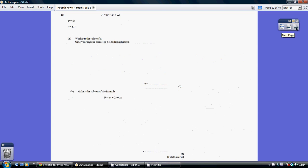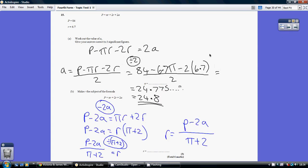Question 15. Not too bad. We've got to work out the value of a, so I would just make a the subject. This is the only term with a in it, so just take everything else to the other side. Take away 2r and take away pi r. So p minus pi r minus 2r equals 2a.